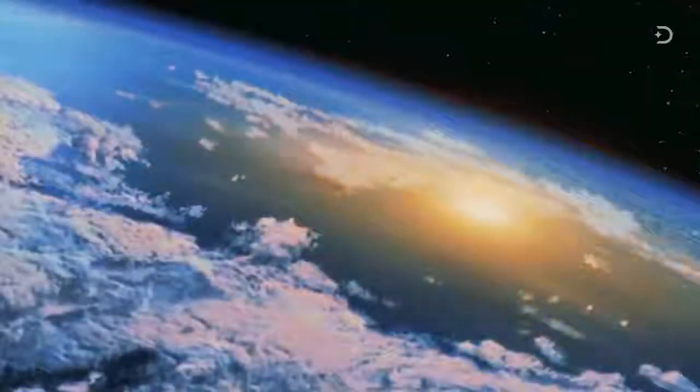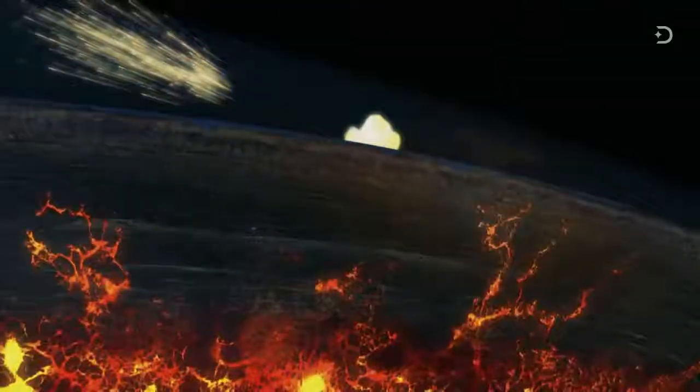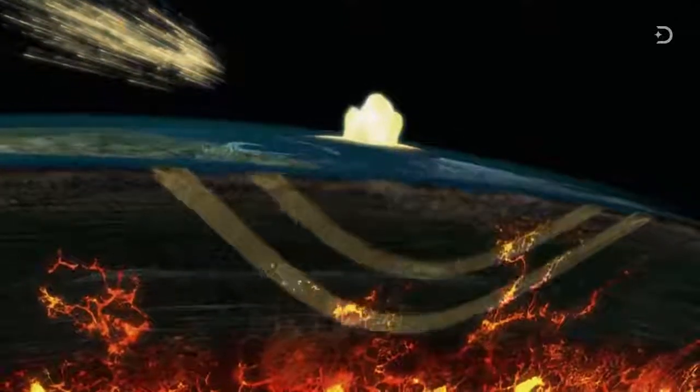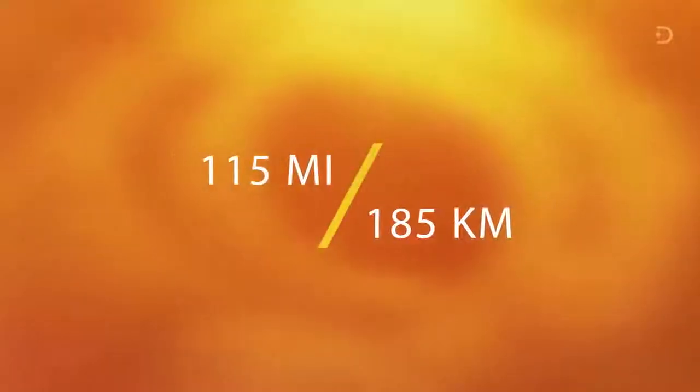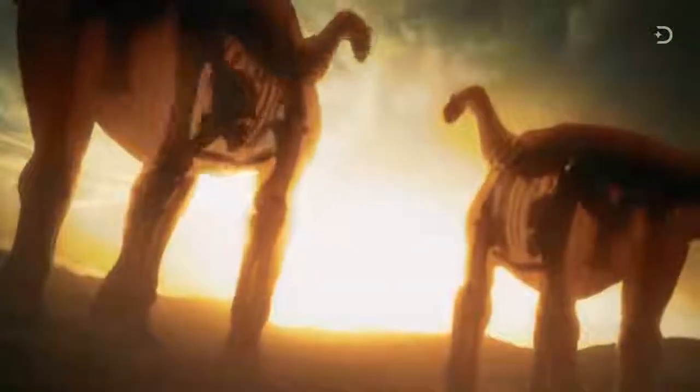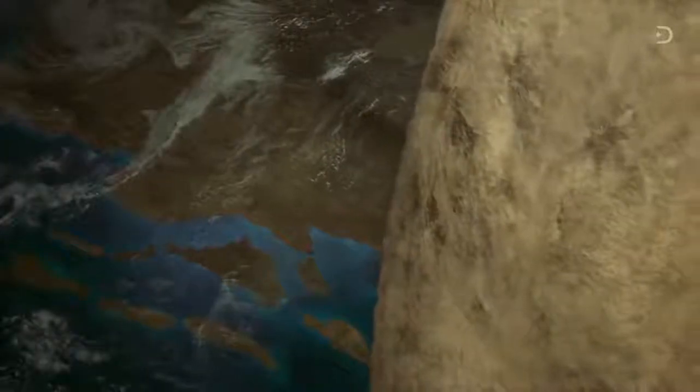An instant later, the asteroid slams into Earth with an explosive yield of over 100 trillion tons of trinitrotoluene. Upon crashing into the planet, the impact penetrates Earth's crust to a depth of several miles and gouging a crater more than 115 miles or 185 kilometers across while vaporizing thousands of cubic miles of rock.